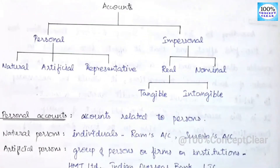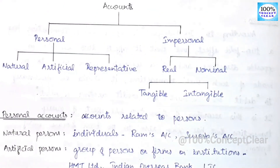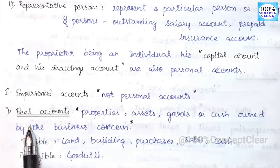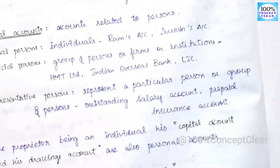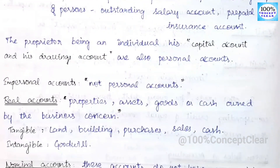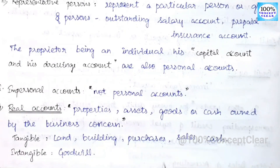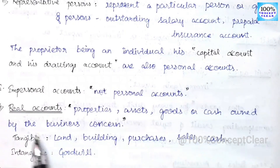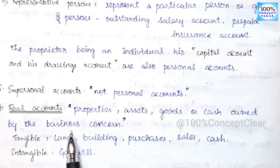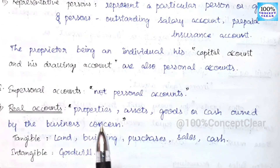The next account is impersonal account — meaning not a personal account. Impersonal accounts are real account and nominal account. Real account relates to properties, assets, goods, or cash owned by the business concern. A business concern owns properties, assets, goods, and cash — so this is the real account.